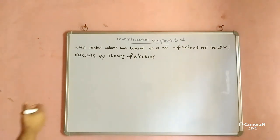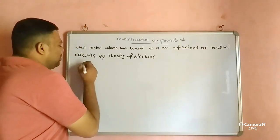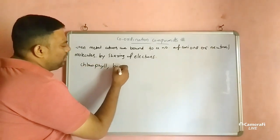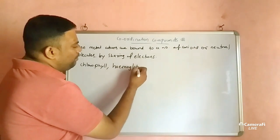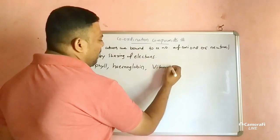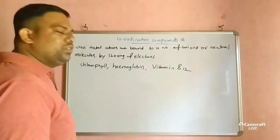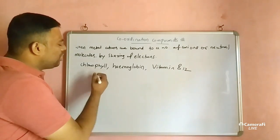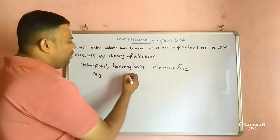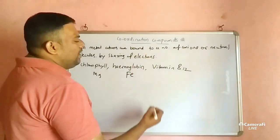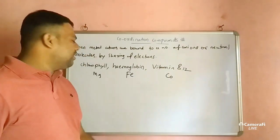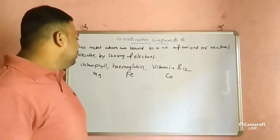Most important examples: chlorophyll contains magnesium metal in complex form, hemoglobin contains iron, and vitamin B12 also contains metal in complex form. These are all coordination compounds.